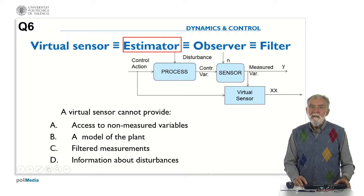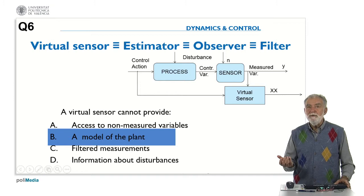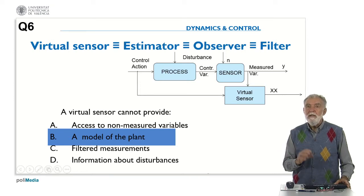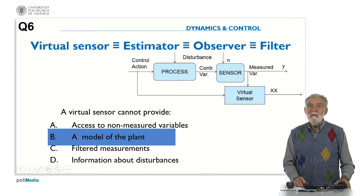But in general, a virtual sensor is not able to provide a model of the plant. The model of the plant is based on the internal structure and the parameters of the model, and we need to know that in order to implement the virtual sensor. So the correct answer is: a virtual sensor cannot provide a model of the plant. Thank you.